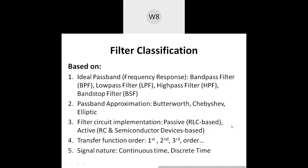Now since we understand what a filter does and why it is needed, it is important to understand what the various subclasses of filters are. They are classified on various aspects. If we classify filters based on frequency response — that means plotting the transfer function with respect to frequency — there are four major classes: band pass filter, low pass filter, high pass filter, and band stop filter. This classification is based upon what frequency components are allowed to reach the output side, or alternatively, which are suppressed.